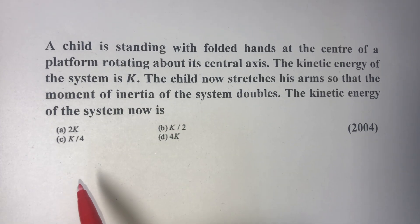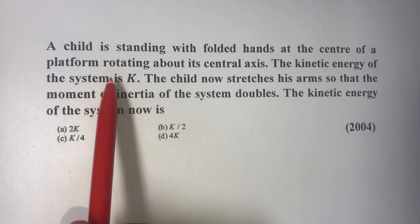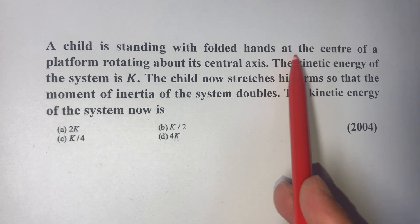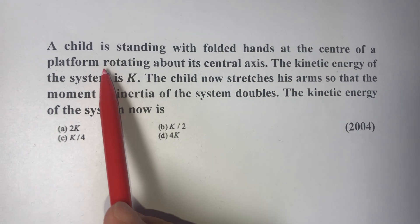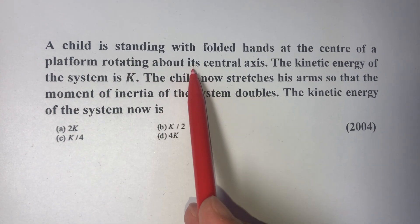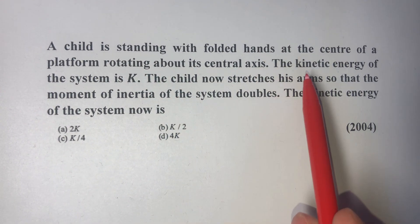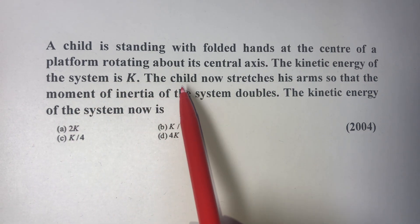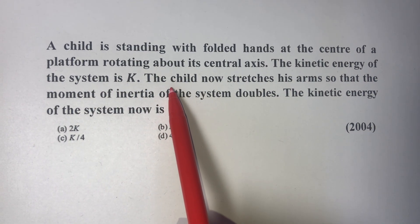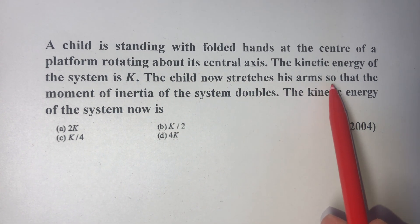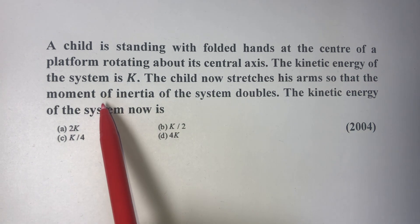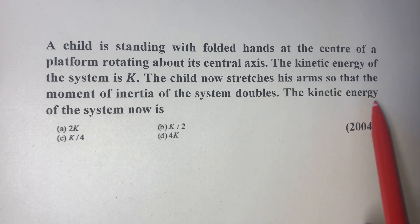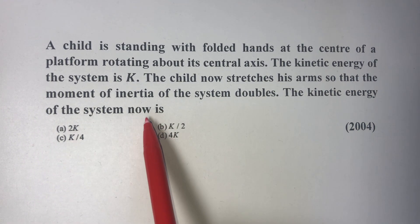Hello friends. In today's question, a child is standing with folded hands at the center of a platform rotating about its central axis. The kinetic energy of the system is K. The child now stretches his arms so that the moment of inertia of the system doubles. The kinetic energy of the system now is?